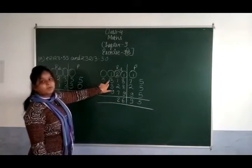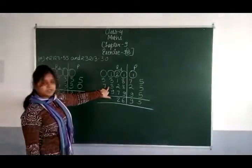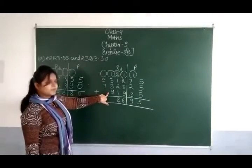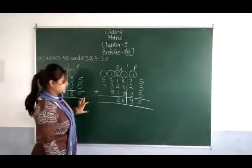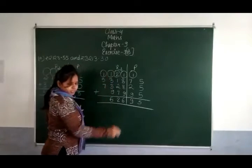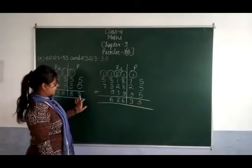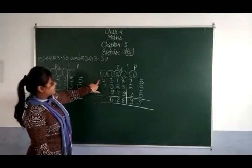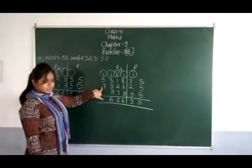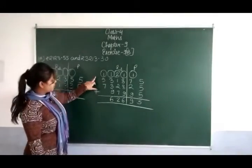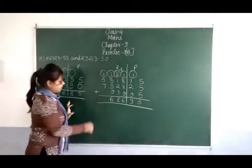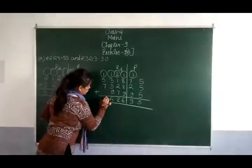1 plus 3 is 4. 4 plus 3 is 7. 7 plus 9 is 16 — write 6, carry 1. 1 plus 5 is 6. 6 plus 7 is 13 — write 13. We have written it here.